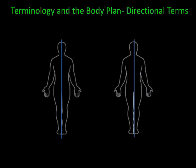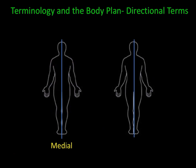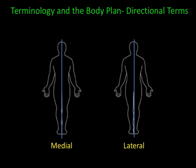The next set of terms orient the body in reference to the midline. Closest or towards the midline of the body is medial. For example, the ear is medial to the shoulder and the wrist is lateral to the knee.